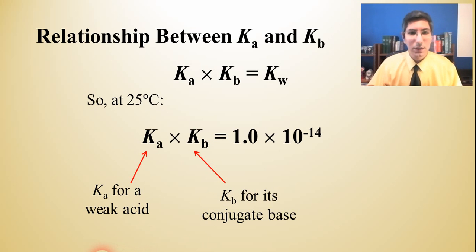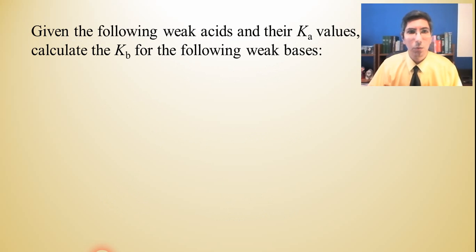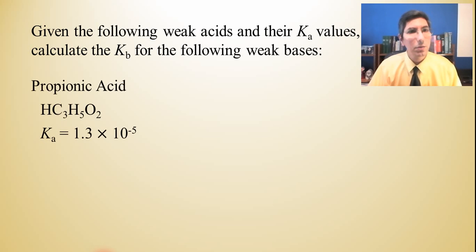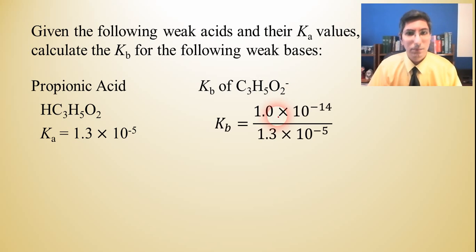We're going to be doing some examples with this here. Let's try this problem where we're given some weak acids and their Ka values. Let's see if we can find the Kb for their corresponding weak bases. So here we have propionic acid, which has the formula HC3H5O2, and there's its Ka. What is the Kb of C3H5O2 negative? All we have to do is take 1 times 10 to the negative 14th and divide it by Ka. When you key that into your calculator, you'll find that it's 7.7 times 10 to the negative 10th.